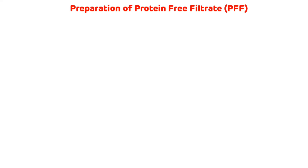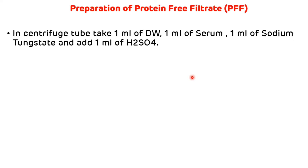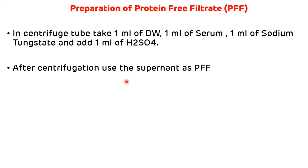Preparation of protein-free filtrate: in a centrifuge tube, take 1 ml of distilled water, 1 ml of serum, 1 ml of sodium tungstate, and add 1 ml of sulfuric acid. After centrifugation, use the supernatant as the protein-free filtrate. However, for UG and MBBS practicals, this protein-free filtrate is given directly, so students do not have to prepare it.